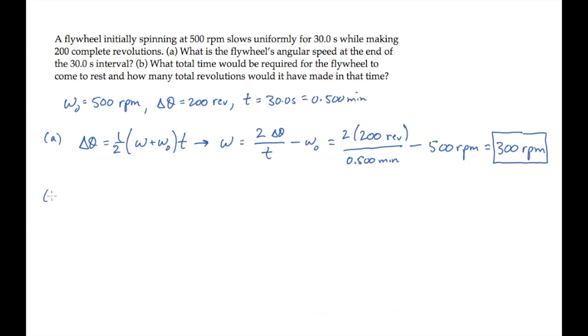Part B asks us to find the time that would be required for the flywheel to come to rest. To find that, we'll first need to know the angular acceleration alpha, which we can find from the time-independent kinematic equation.